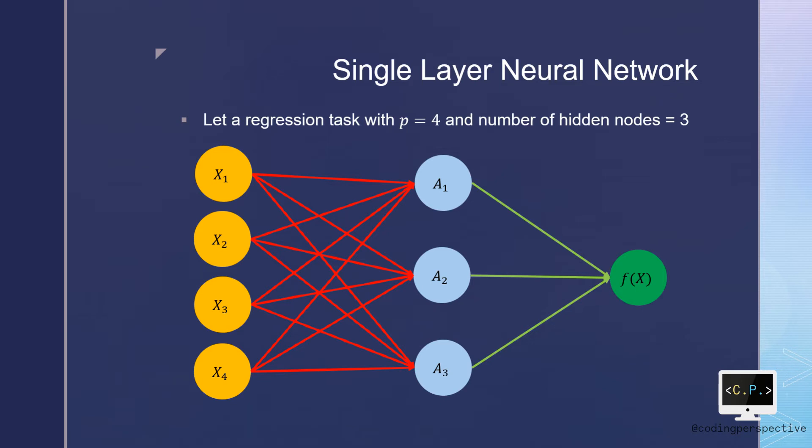Let us go from output to the input layer. The model calculates fx as beta 0 plus beta k times ak, sum over k's.